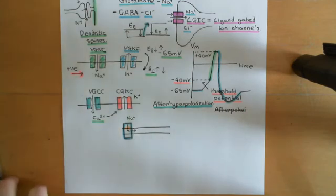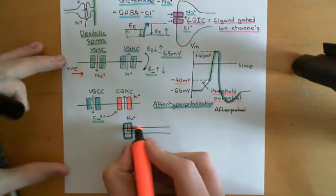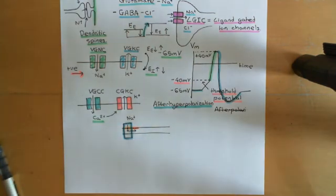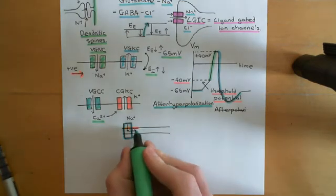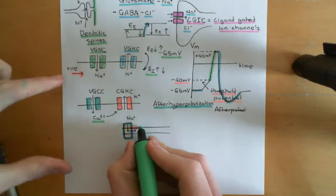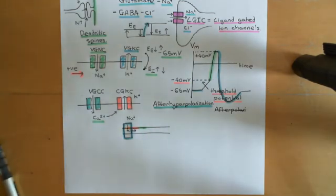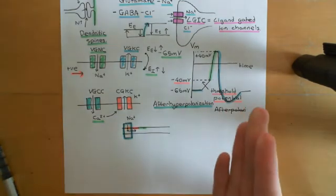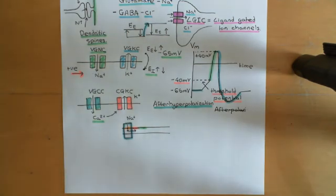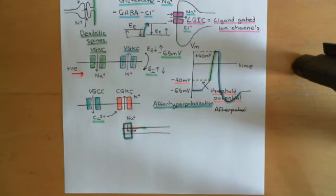This portion will then fire an action potential. When this next little patch fires an action potential, it too will let in a lot of sodium ions, and those sodium ions will spread into the cytoplasm of the neighbouring portion of the membrane. And it will go on and on, propagating along the axon right into the axon terminal, where it will induce the release of neurotransmitter.